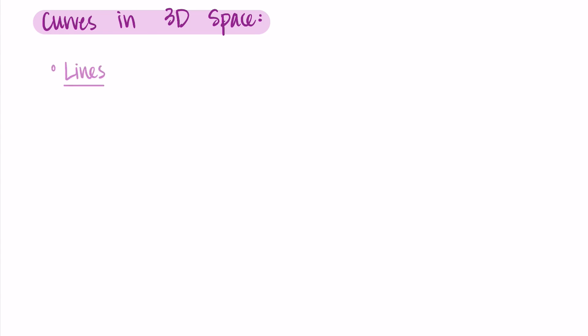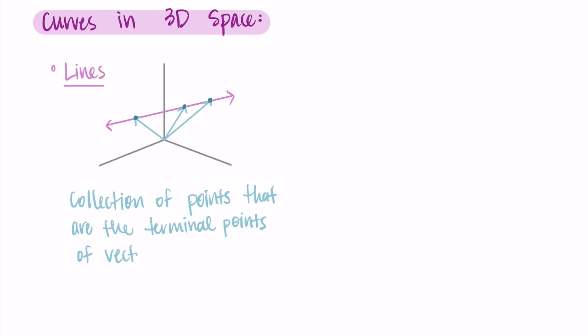So we think about lines. If I have a line in three-dimensional space, I can think of each vector pointing to a specific point on that line, and we represent the line by the collection of all of these vectors, where each vector starts at the origin and points to a single point on the line. So really, the line is thought of as a collection of points that are the terminal points of vectors from the origin.